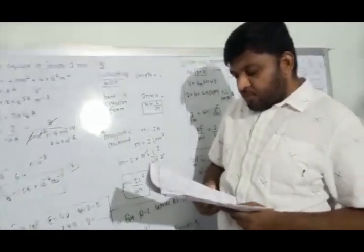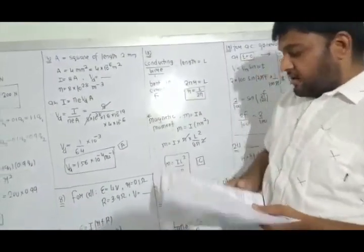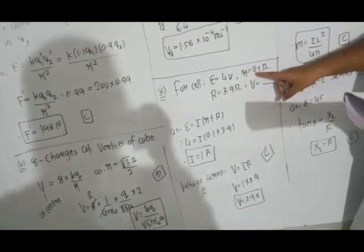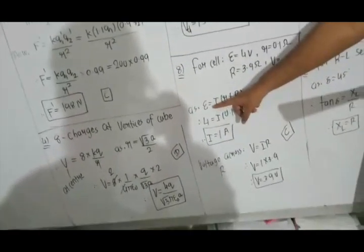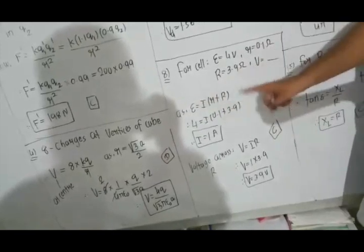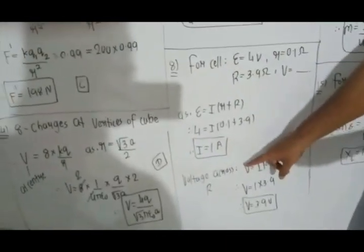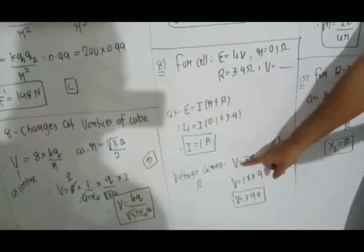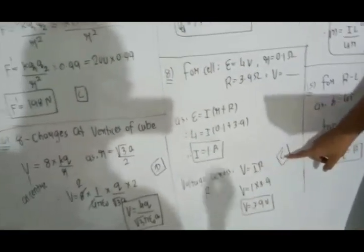Question number 8. A cell of EMF 4 V has internal resistance r = 0.1 Ω, connected to an external resistance R = 3.9 Ω. Current I = EMF/(r + R) = 4/4 = 1 A. Voltage across the cell V = I·R = 1 × 3.9 = 3.9 Volt. Option C.